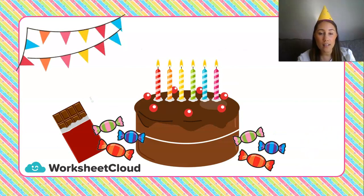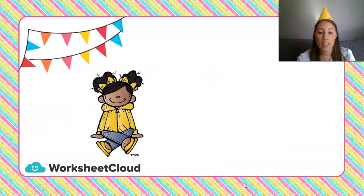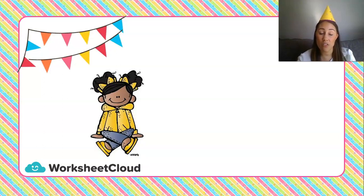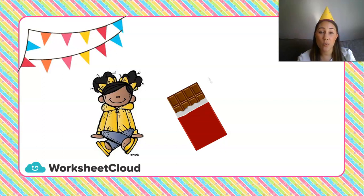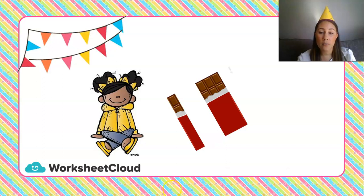Welcome to our party! At our party we've got some treats — we've got a cake here in the middle with some birthday candles, a slab of chocolate, and some sweets around the side. Lots of delicious treats to enjoy today. My friend Susan has arrived a little bit early, so I think we should share some of our treats with her. So I think it's only fair that we break this chocolate up so Susan can get some and I can get some. Here I have one whole chocolate, and there we go — I've split the chocolate into two parts. I've shared it, so there's a part for Susan and a part for me.